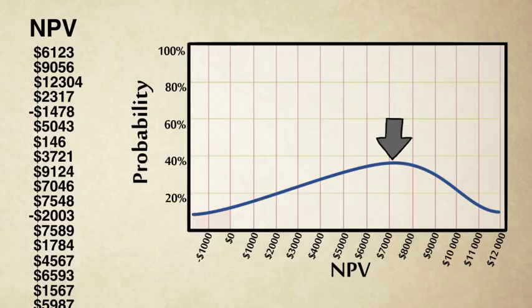Now we know our most likely net present value is here. And we know that anything below zero, this area here, represents the probability of our project being unprofitable. While this area here is the probability of our project being profitable.